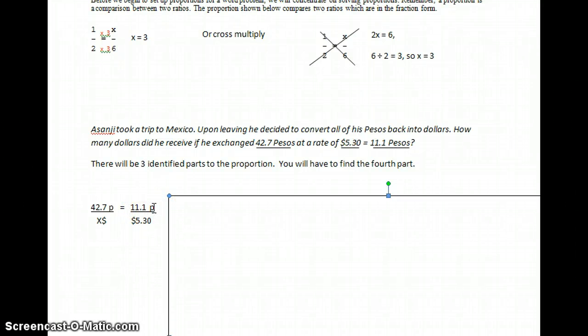Now, one thing I'm doing here to make things a lot easier is putting the measurement. In this case, the measurement is type of money. P for pesos, dollar sign for dollars. So I've used these two parts.